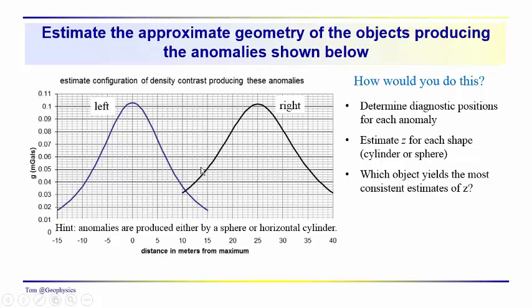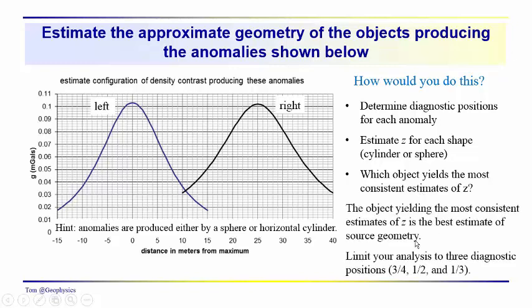So, we'd be looking at these two anomalies. We'd be assuming that they were both a sphere and a horizontal cylinder. And then we'd calculate the depth, assuming that this anomaly was both a sphere and a horizontal cylinder. And we'd see which assumption gave us the most compact, least variability in the estimate of z. And then that would be the object that we would conclude is most likely producing the anomaly that we see here.